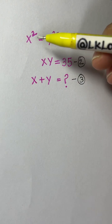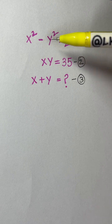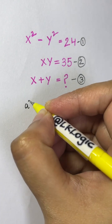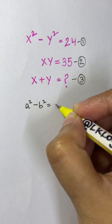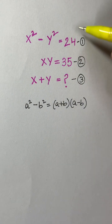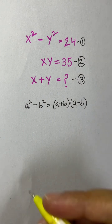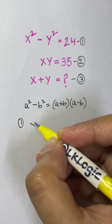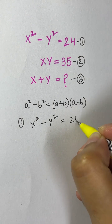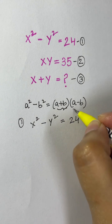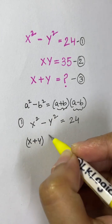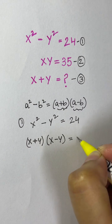From the first equation we can easily identify that it is an identity — a formula. That is: a squared minus b squared is equal to a plus b times a minus b. So from equation 1, x squared minus y squared equals 24 can be written as x plus y times x minus y is equal to 24.